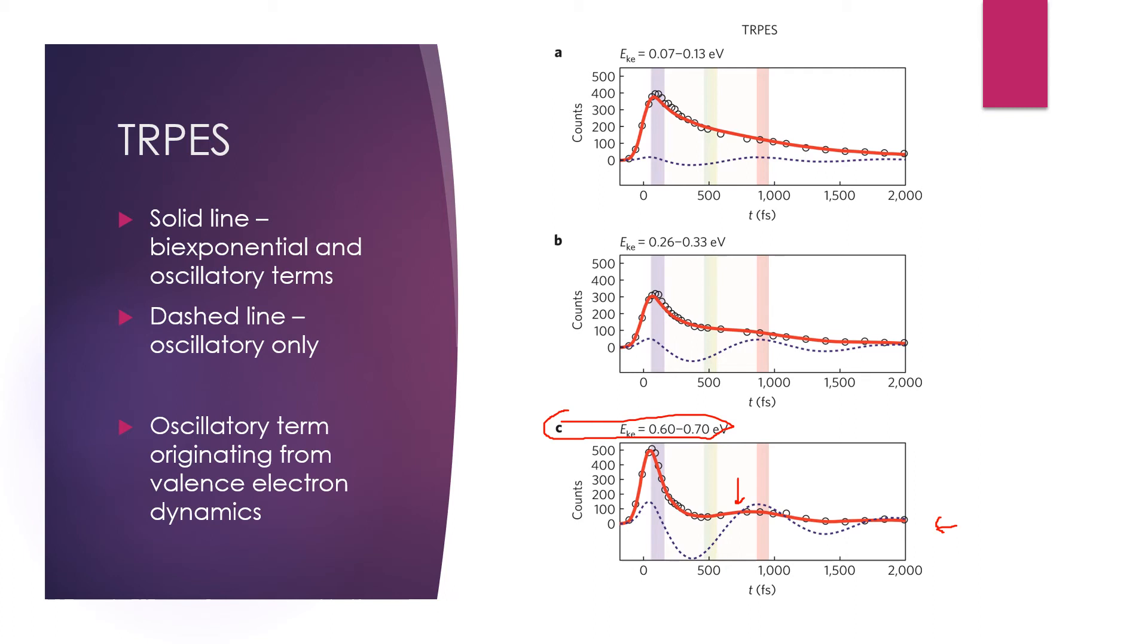The sensitivity of this spectra to the oscillatory term is lower for higher vibrational states, as the photoionization matrix elements are affected more by this vibrational character than the oscillations of the valence electrons. So when there's no vibrational character, it's affected strongly by the oscillations.